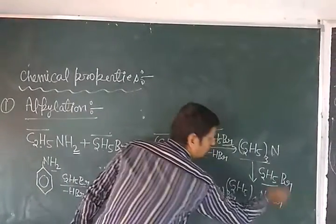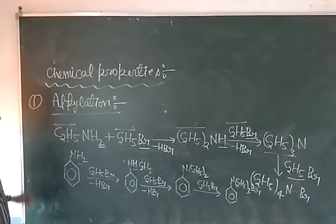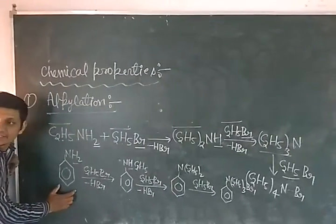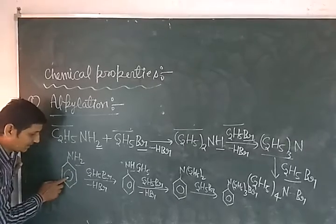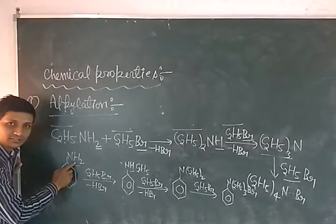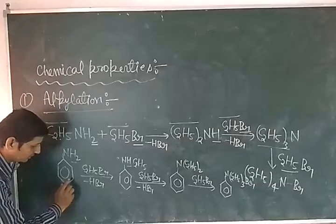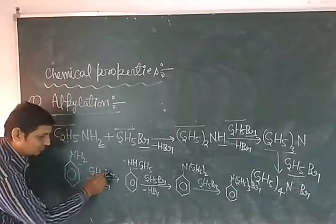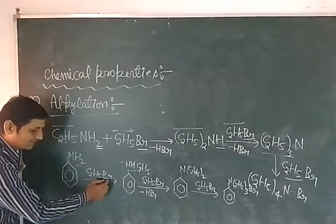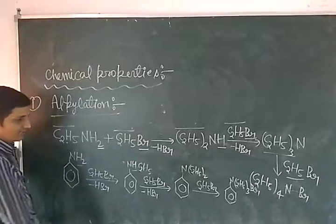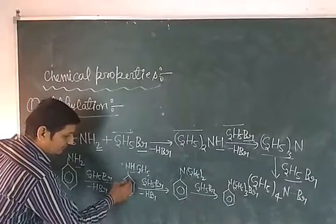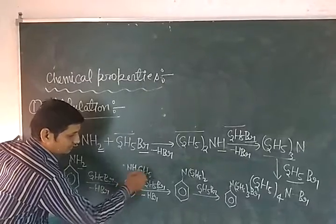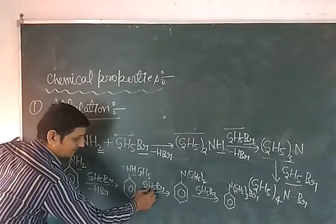After this, aniline. Aniline reacts with ethyl bromide. Then H and Br combine to form HBr and here C6H5 and then C2H5 which again reacts with ethyl bromide.